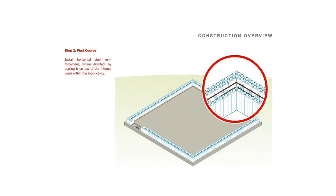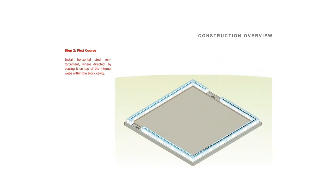Install horizontal steel reinforcement where directed, by placing it on top of the internal webs within the block cavity.